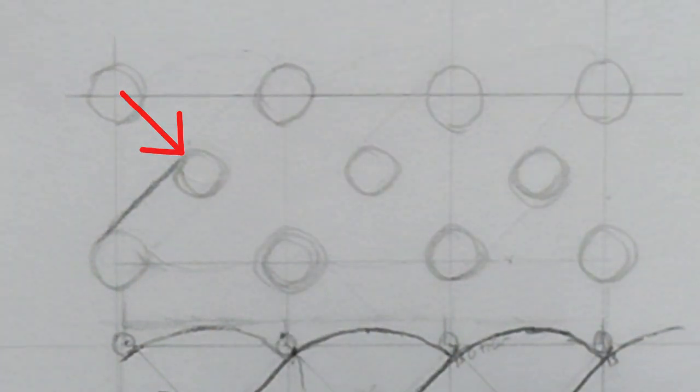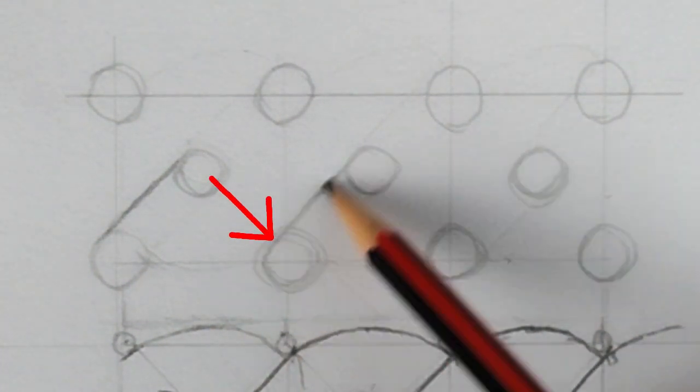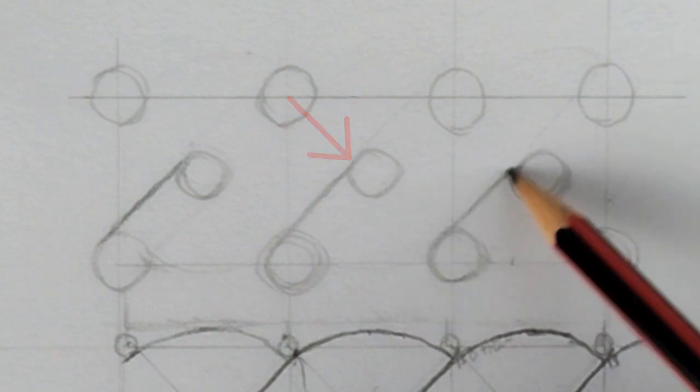As in the previous video, draw lines 45 degrees from the top of the circle on the bottom row up to the top of the middle circle.